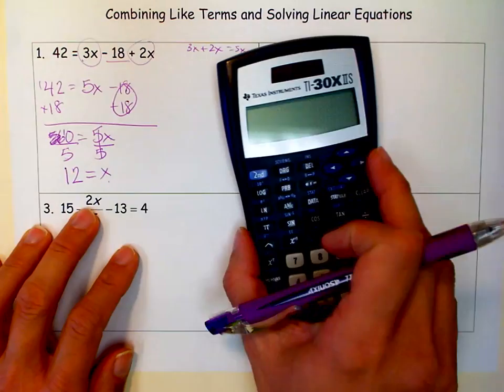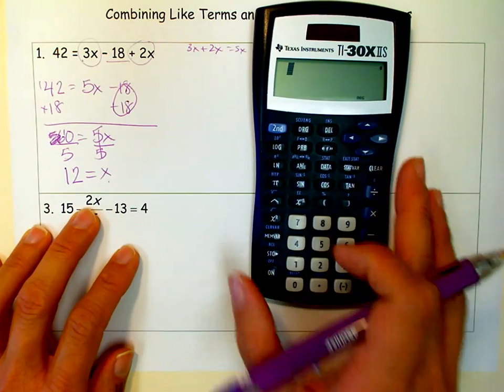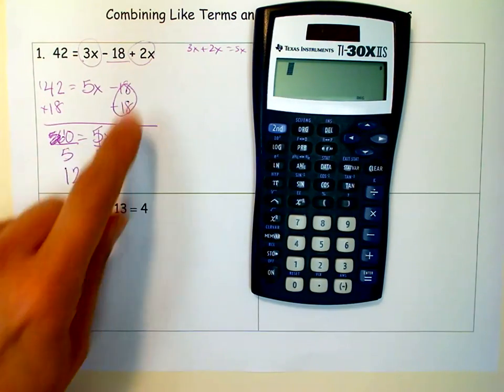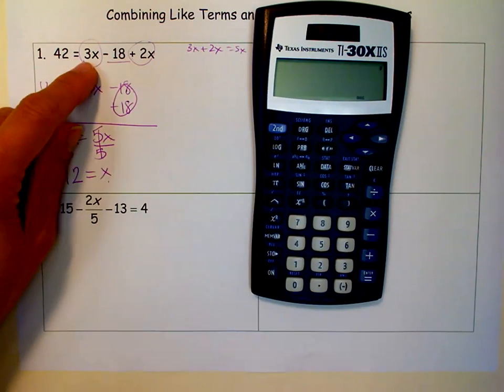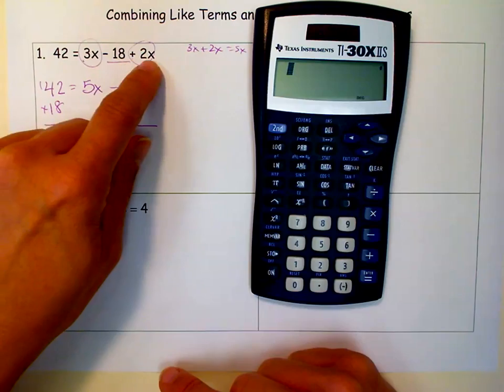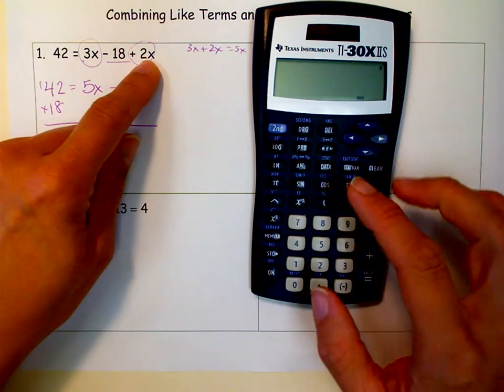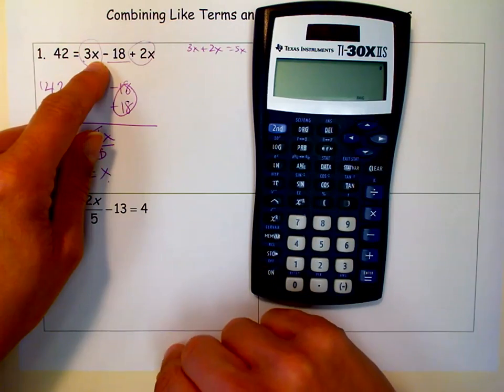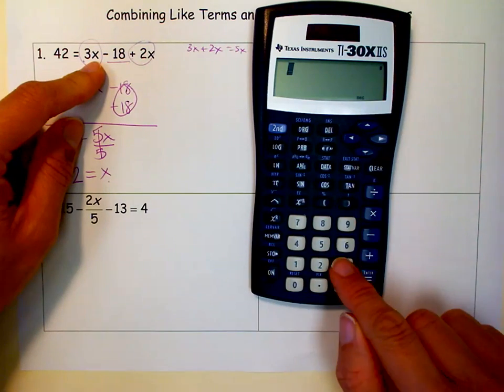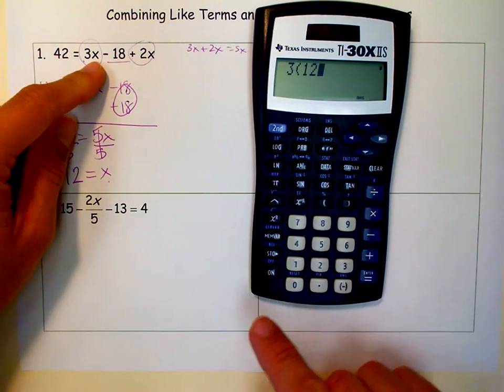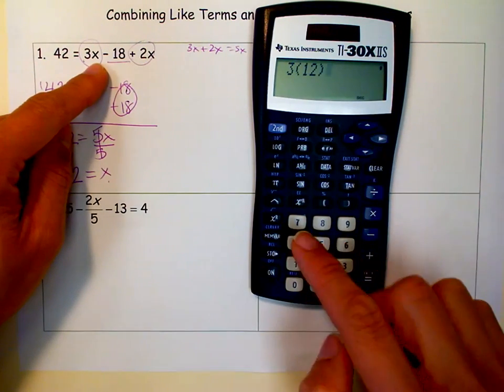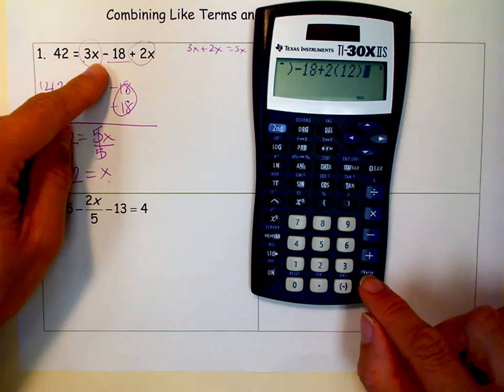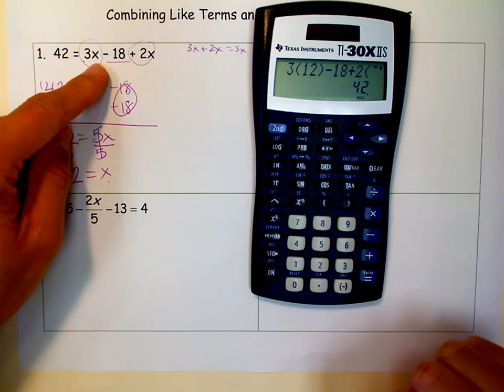Now I want to show you how you can check that in your calculator by plugging this 12 back in for every x. Sometimes we make a mistake when we combine things, so it's really important that you check the 12 in the original equation. So what I'm going to do is I'm going to write this right side in my calculator. You want a calculator that you can actually write a bunch of stuff in, that you'll see it on the screen, and every time I see an x, I'm going to put a 12 in because that's what I think x is. So I'm going to say 3 parenthesis, meaning multiplication, because that's 3 times x. When a 3 is right next to an x it means multiplication. So 3 times 12 minus 18 plus 2 times 12, and it's all in there at once. If it equals 42, I know that I did it correctly. It does. Beautiful.